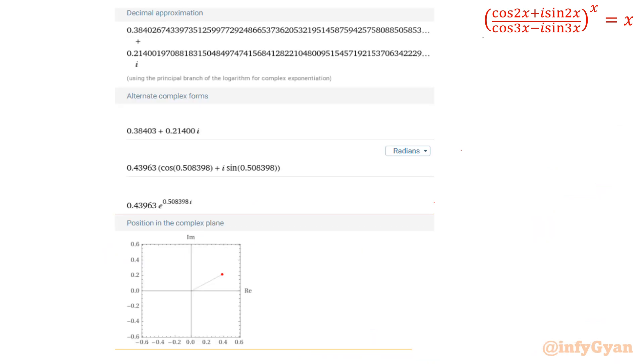This is in Cartesian form, a plus ib form. This is Cartesian, this is Euler's form, this is polar form. Different forms are there. How we can find out?